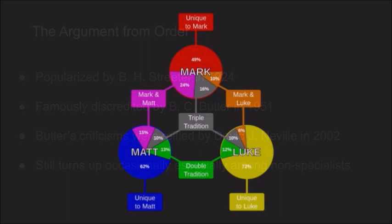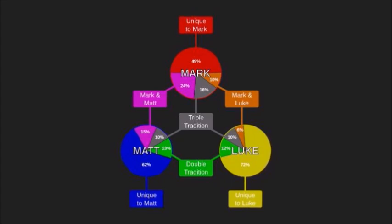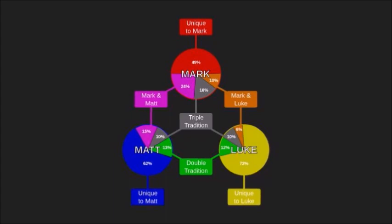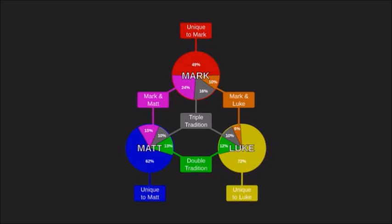The argument is based upon the fact that Mark's order of pericopes and events is generally also found in Matthew and Luke, and when either Matthew or Luke has an order which differs from Mark, then the other Gospel usually follows Mark's order. Matthew and Luke only rarely agree together against Mark in their pericope order. From this phenomenon, Streeter inferred that Matthew and Luke must have used Mark, as they rarely agree in order against Mark's order.